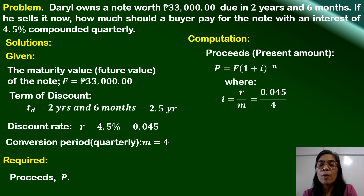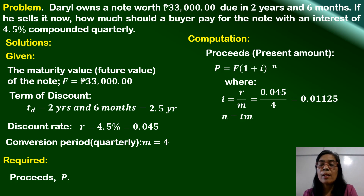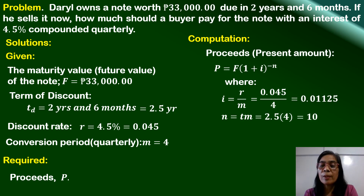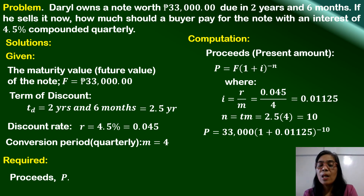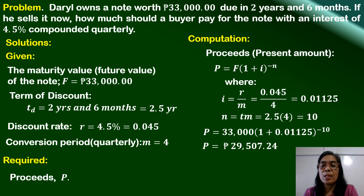The period rate i is R over m: 0.045 divided by 4 equals 0.0125. The total number of compounding periods is t times m: 2.5 years times 4 equals 10 compounding periods. Substituting, P equals 33,000 times 1 plus 0.0125 raised to negative 10. The present value of the note, or the proceeds, is ₱29,507.24.